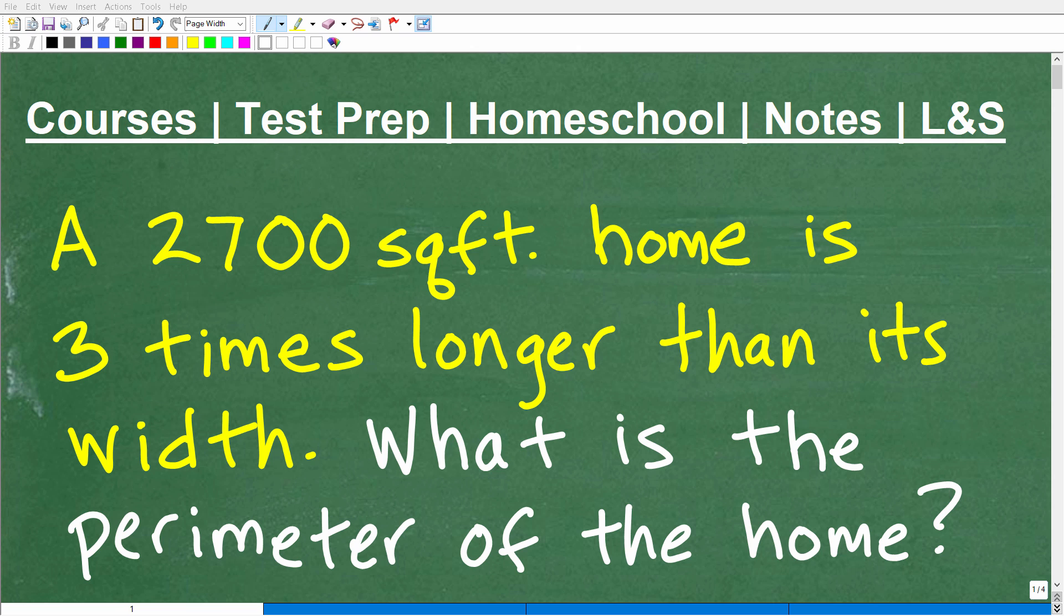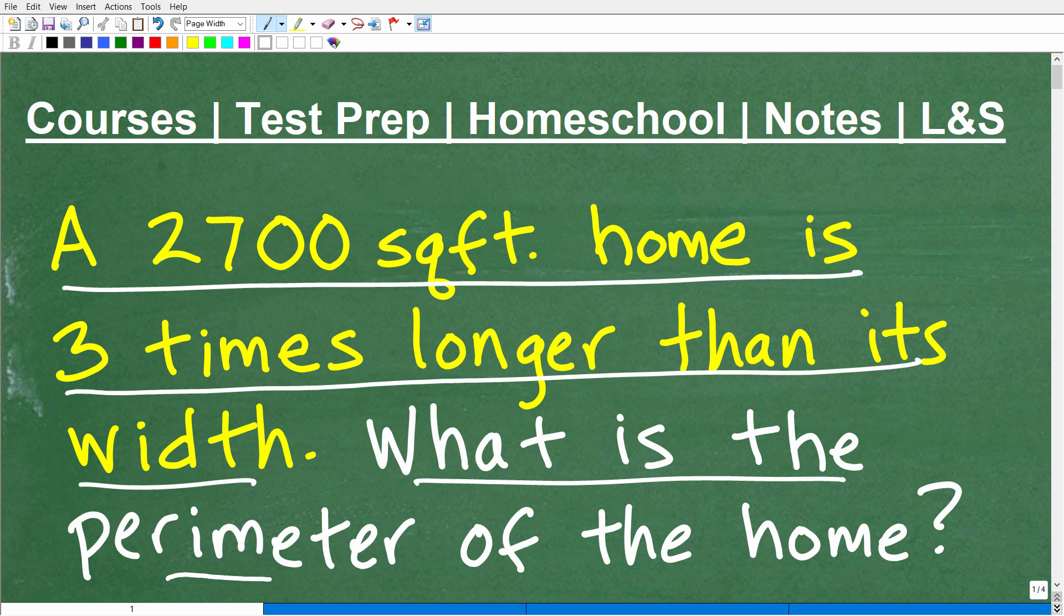Okay, let's go ahead and figure out the solution to this nice little algebra word problem here. And of course, the first step in solving any problem in mathematics is to read the problem. So let's go ahead and do that right now. It says a 2,700 square foot home is three times longer than its width. What is the perimeter of the home?